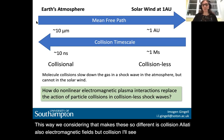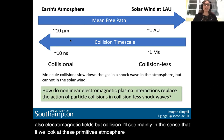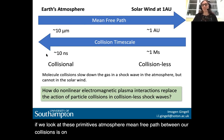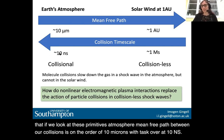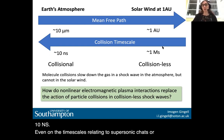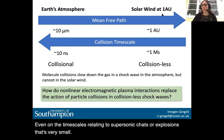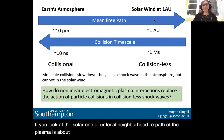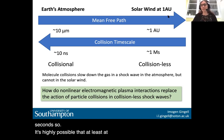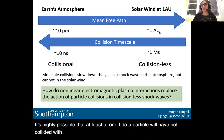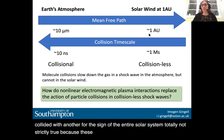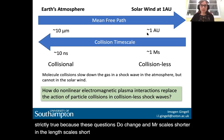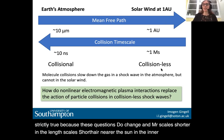In Earth's atmosphere, the mean-free path between particle collisions is on the order of 10 microns with a timescale of about 10 nanoseconds — very small even on timescales relating to supersonic jets or explosions. Whereas in the solar wind at 1 AU, the mean free path of the plasma is about 1 AU. It's entirely possible that at 1 AU, a particle will have not collided with another for the span of the entire solar system. As a general rule, we can consider that waves in space are collisionless.